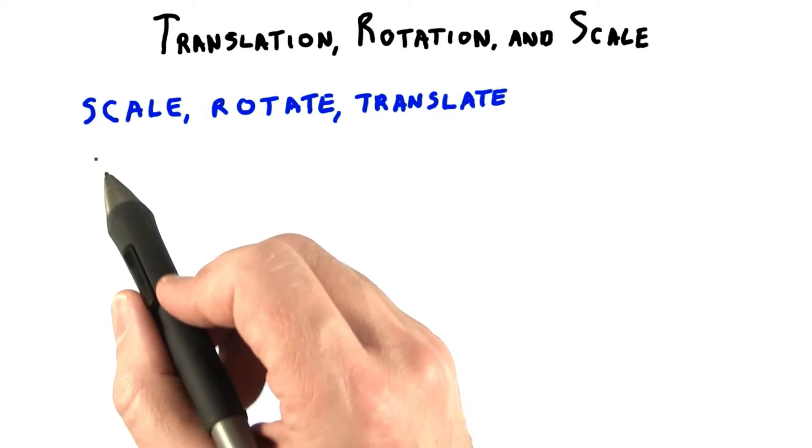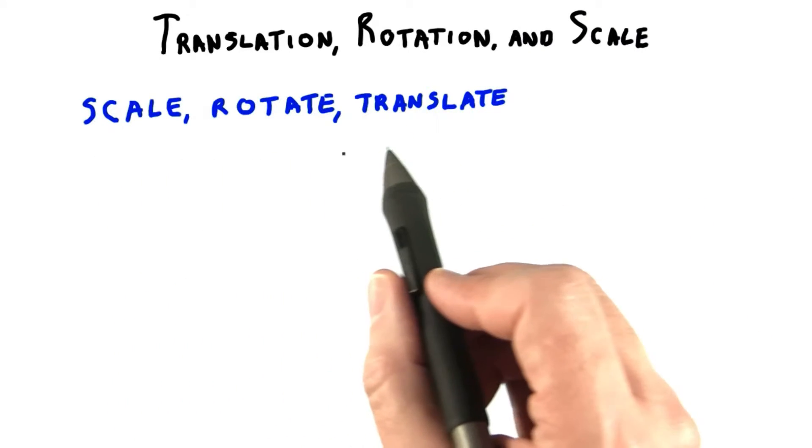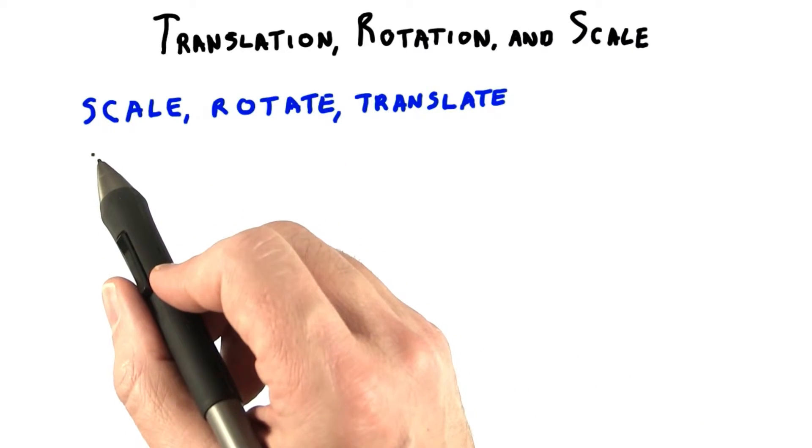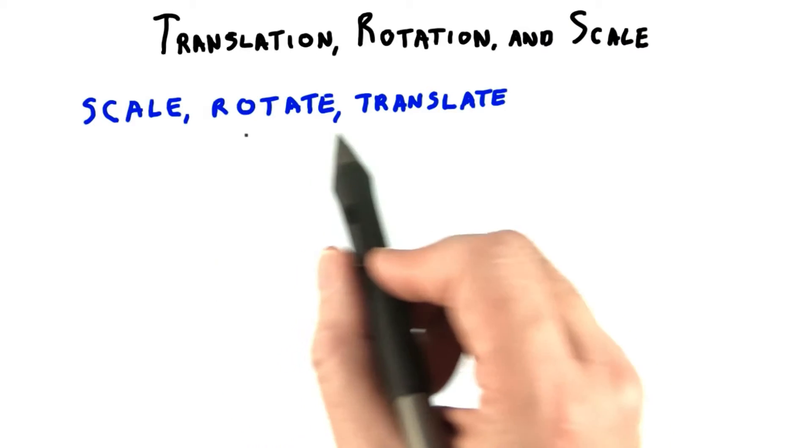The answer is plenty. Order matters when rotations or scales are involved. 3JS uses the following order to apply the transforms on an object: scale, rotate, translate.